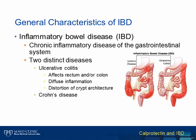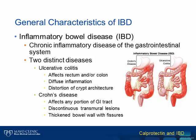Ulcerative colitis primarily affects the colon and or the rectum, which is shown in the figure as the reddened areas. Ulcerative colitis also is characterized by diffuse inflammation, which ultimately leads to distortion of the crypt architecture, which can be seen on biopsy evaluation. In contrast, Crohn's disease can affect any portion of the GI tract. Also with Crohn's disease, the lesions tend to be more discontinuous and transmural in nature, leading in some cases to a thickened bowel wall with evidence of fissures.